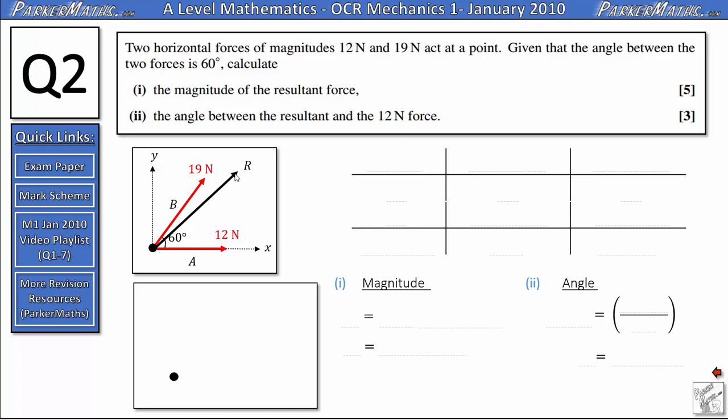In order to find the magnitude of this resultant force we're going to resolve in the x direction and in the y direction. Notice how I've labelled the 12 Newton force A and the 19 Newton force B, that's to help me in this table that I'm going to draw here. So, I've got my forces and I'm going to resolve in the x direction and the y direction and I've got forces A and B.